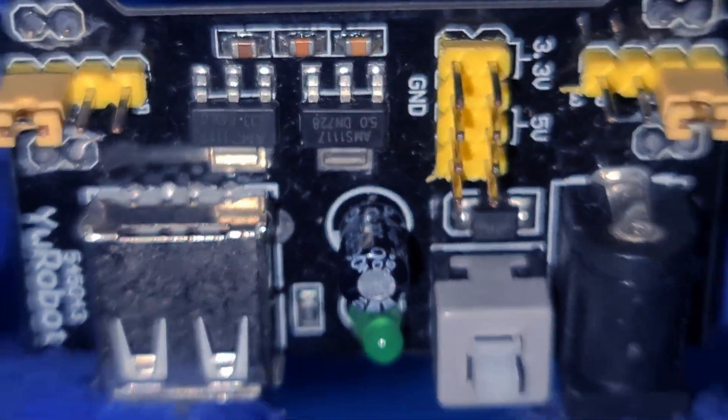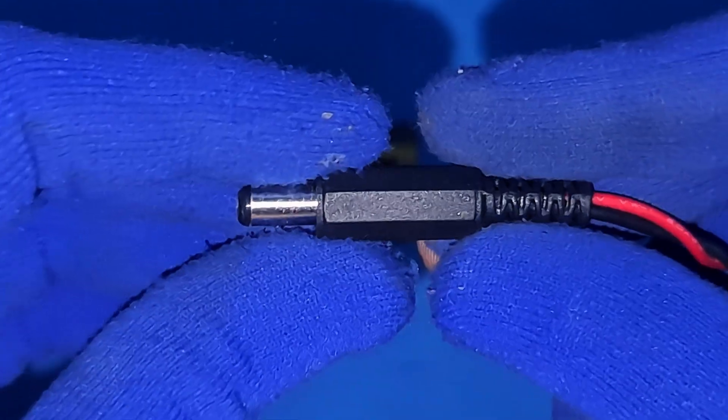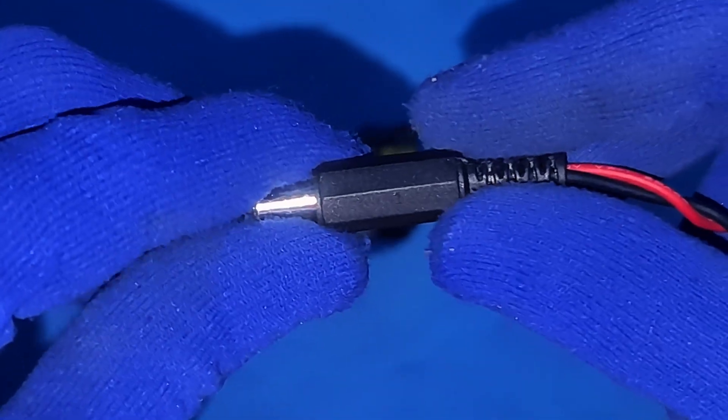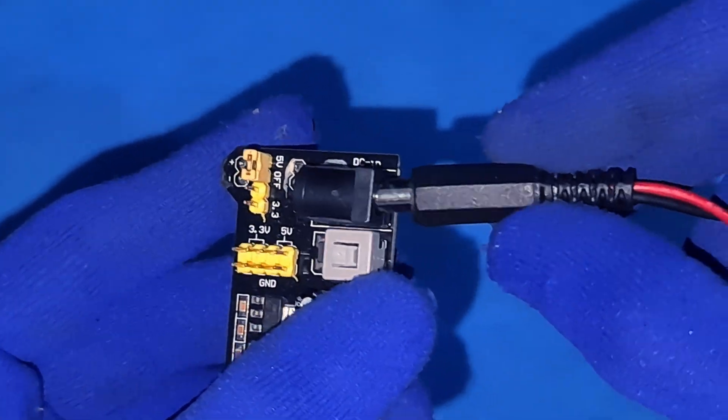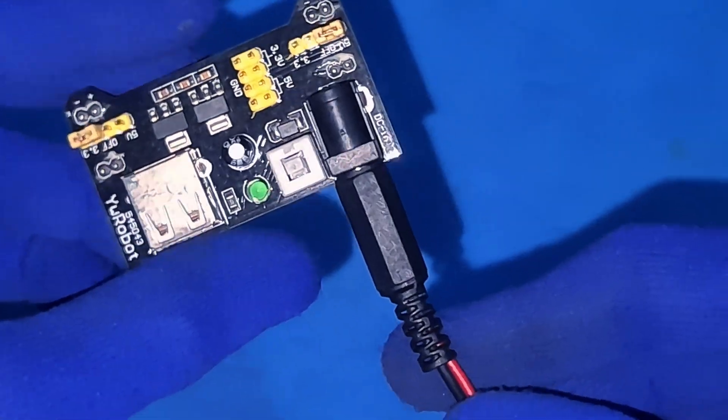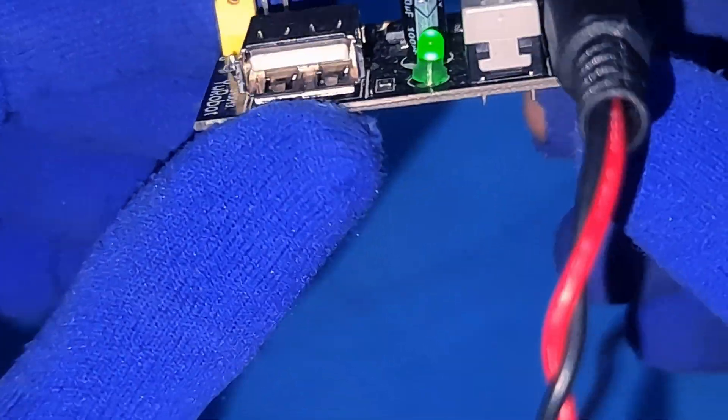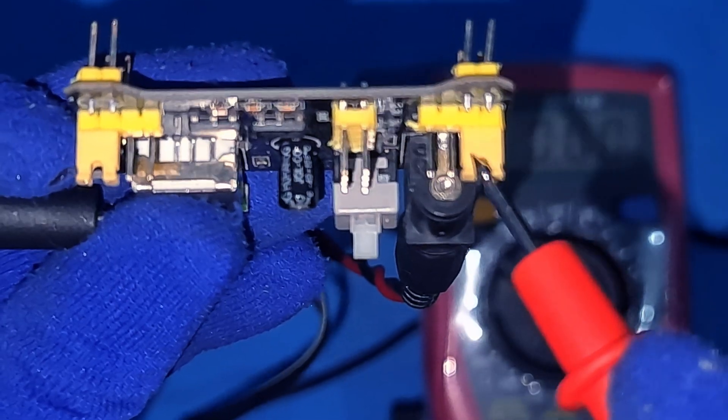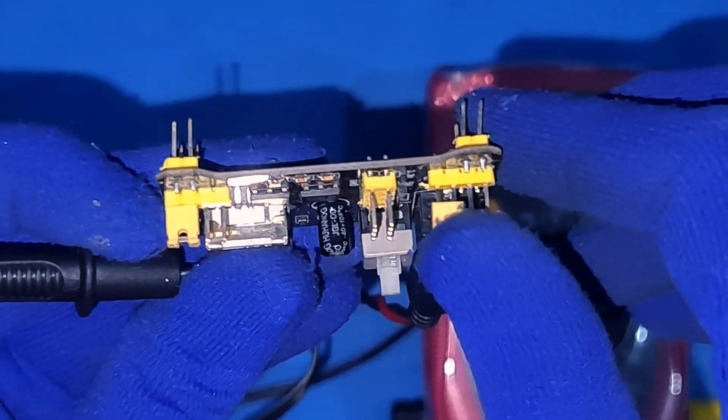Now let's look at the YW Robot Dual Output Power Supply Board. This small but mighty unit is perfect for prototyping and development. Despite its compact design, this board accepts an input voltage from USB or a DC barrel jack, and provides two regulated outputs.